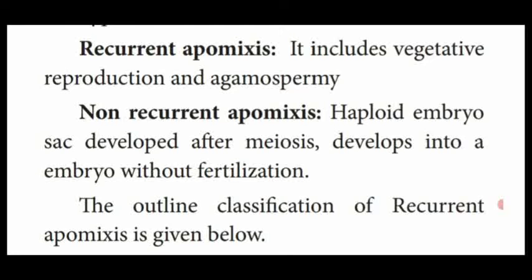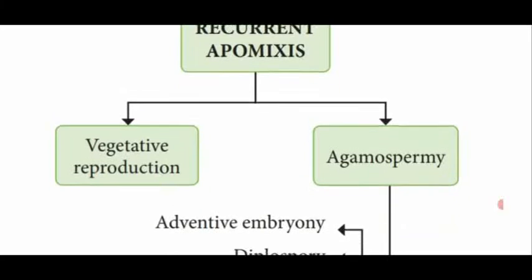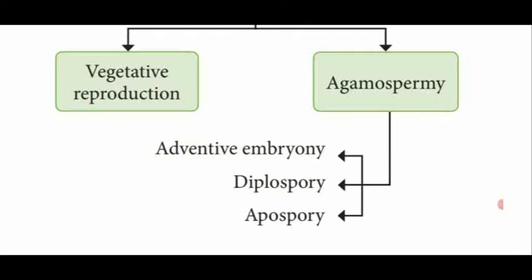Recurrent apomixis is again divided into two types we already mentioned: vegetative reproduction and agamospermy. Agamospermy is the another method of recurrent apomixis. Agamospermy is divided into three types: adventive embryony, diplospory, and apospory. Agamospermy is the important five mark question - separately they will ask: write the different methods of agamospermy with examples.